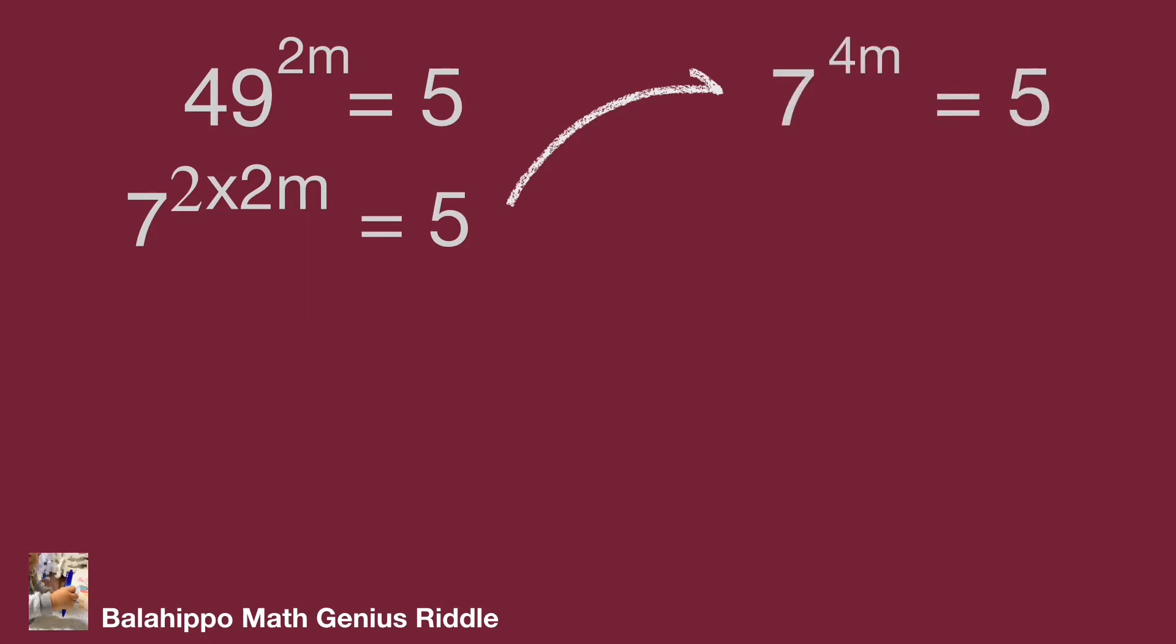Multiply the equation 7 to the power of 5n equals 1 over 5. Then it becomes 7 to the power of 4m plus 5n equals 1.